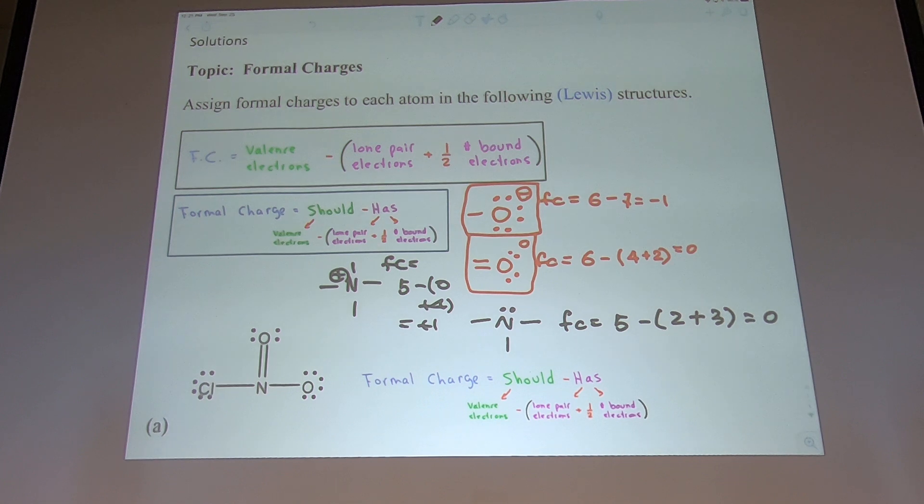One last one is the halogen like chlorine. This is very frequent, chlorine or bromine with single bonds. You can calculate their formal charge is all zero. They should have seven, they feel like having seven, so seven minus seven is zero.